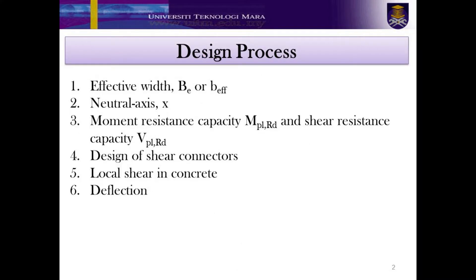Now let's go through the design process for composite construction. In general, we will first need to calculate the effective width b, or b effective. Second, determine the neutral axis x. Third, calculate the moment resistance capacity MPL,RD and shear resistance capacity VPL,RD. Fourth, once the moment and shear have been verified, next is the design of shear connectors. Fifth, check the effect of shear connectors triggering local shear in concrete. Finally, carry out the deflection check.